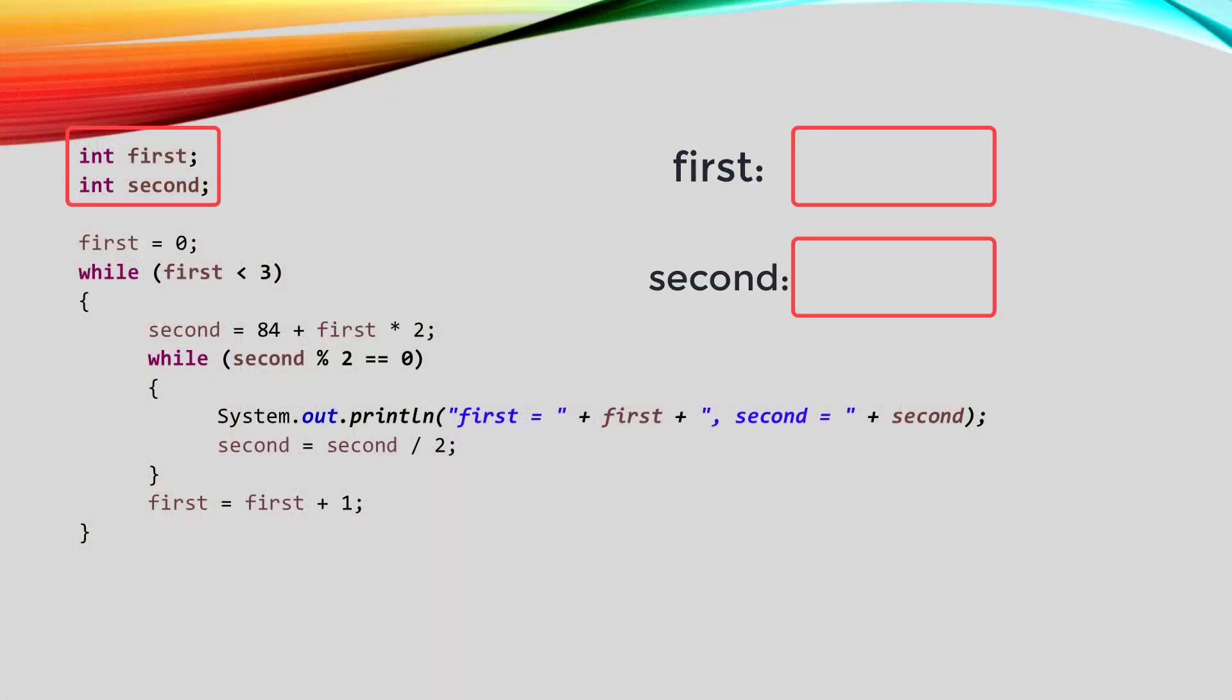Okay, we'll just start at the top. The first two statements declare two variables whose names are first and second, so I have put them in our memory diagram.